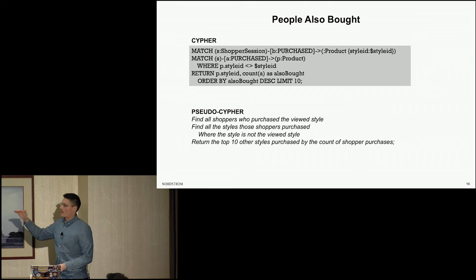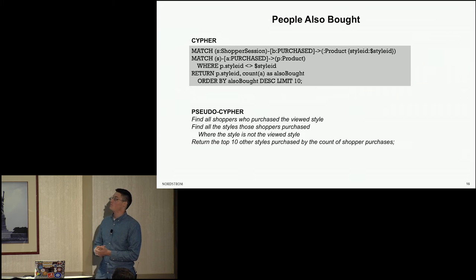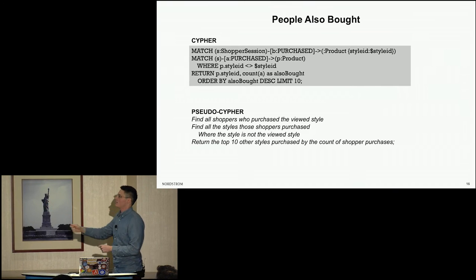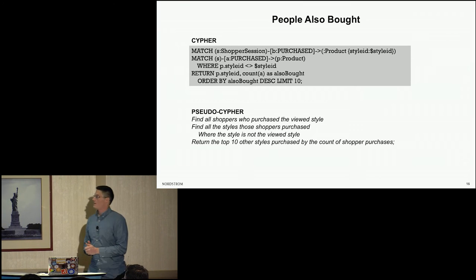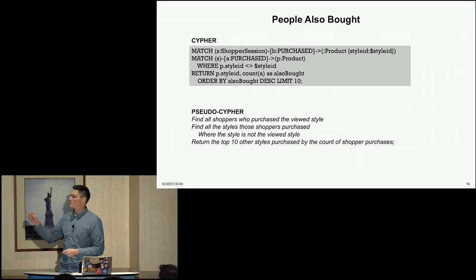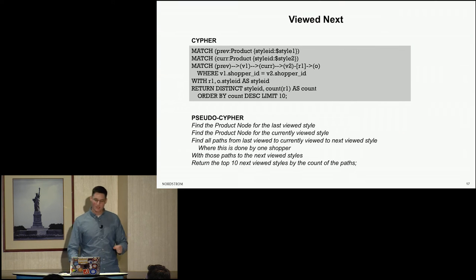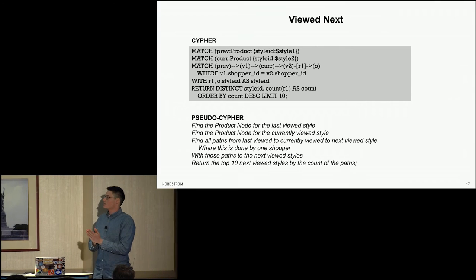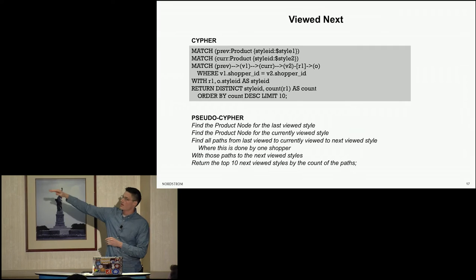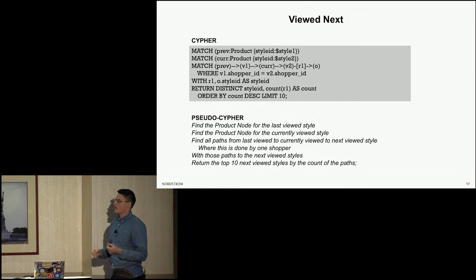I'm not claiming this is the most pure way to write this query, but it is very easy to understand, which is the great thing about Cypher. You can follow along line by line. What we're doing with this Cypher query: we simply find all the shoppers who bought the currently viewed style, take those same shoppers and find all the products those shoppers purchased, where those products are not the one we're looking at right now, then count up the number of people who bought each of those unique styles and return the top ones. That's people also bought.